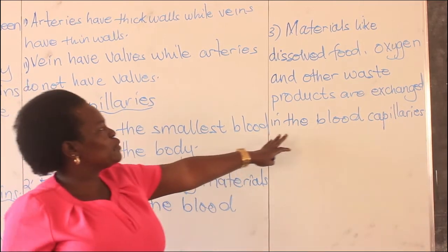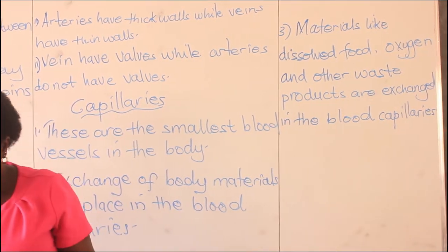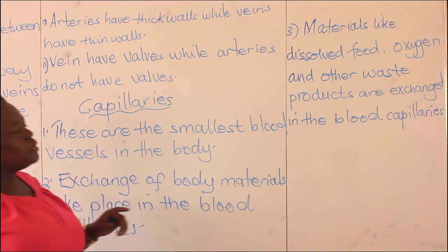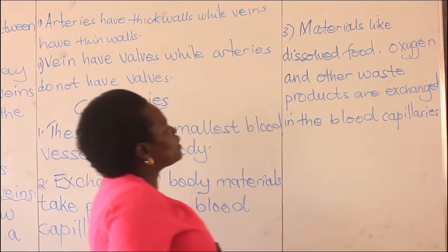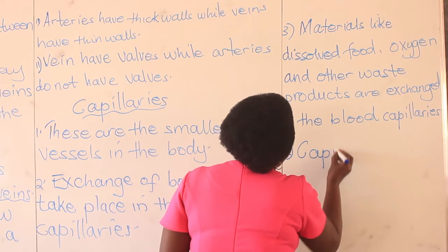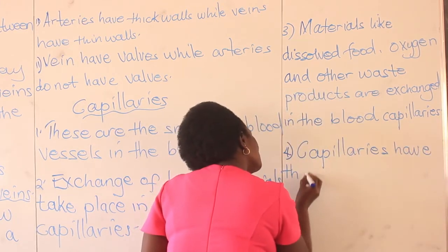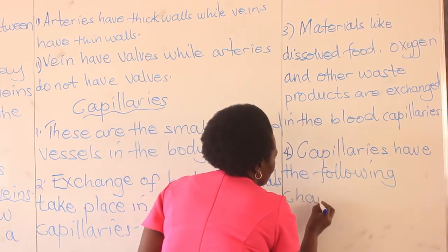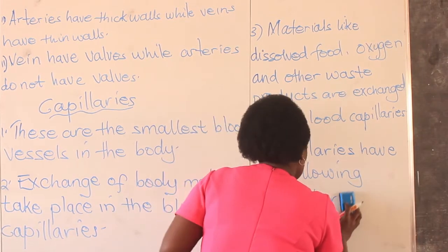When we talk about waste products, we have examples like carbon dioxide, urea, uric acid, and many others. You are going to look at those waste products in detail in your PCV as you learn about the excretory system. Now we are going to look at the characteristics of capillaries — what characteristics do capillaries have?